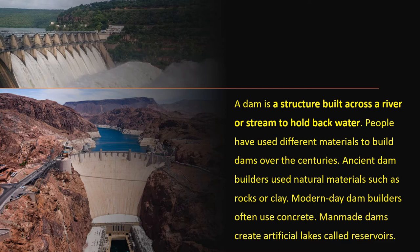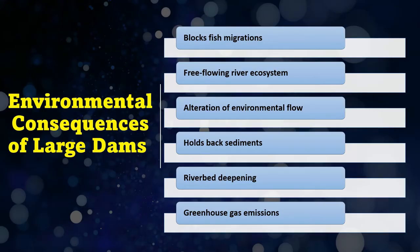Besides these positive impacts, dams have significant environmental consequences. The first is that they block fish migration. The environmental consequences of large dams are numerous and varied, including direct impacts on the biological, chemical, and physical properties of rivers and riparian — that is, streamside — environments. The dam wall itself blocks fish migration, which in some cases completely separates spawning habitat from rearing habitat.